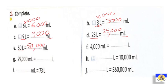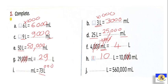To convert from milliliters to liters, we divide by 1000, which means we cancel three zeros. 4000 mL = 4 liters. 29,000 mL ÷ 1000 = 29 liters. 10,000 mL = 10 liters. For letter i: 73 liters × 1000 = 73,000 mL. For letter j: converting mL to liters by dividing - cancel three zeros - answer is 560 liters.